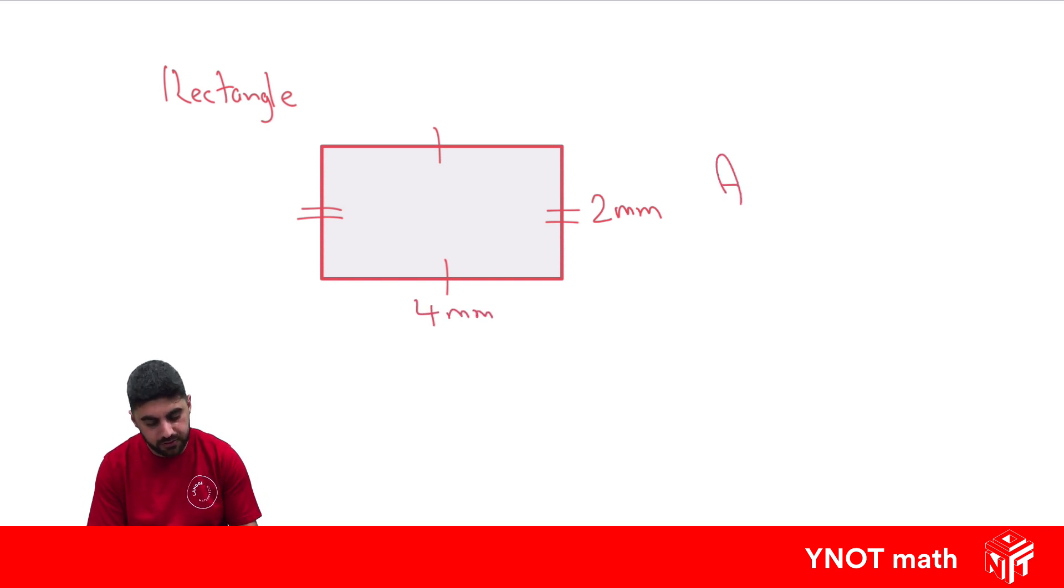To find the area of a rectangle, we just times the length by the breadth. In this case, our four millimeters by two millimeters to give us eight millimeters squared for our area.